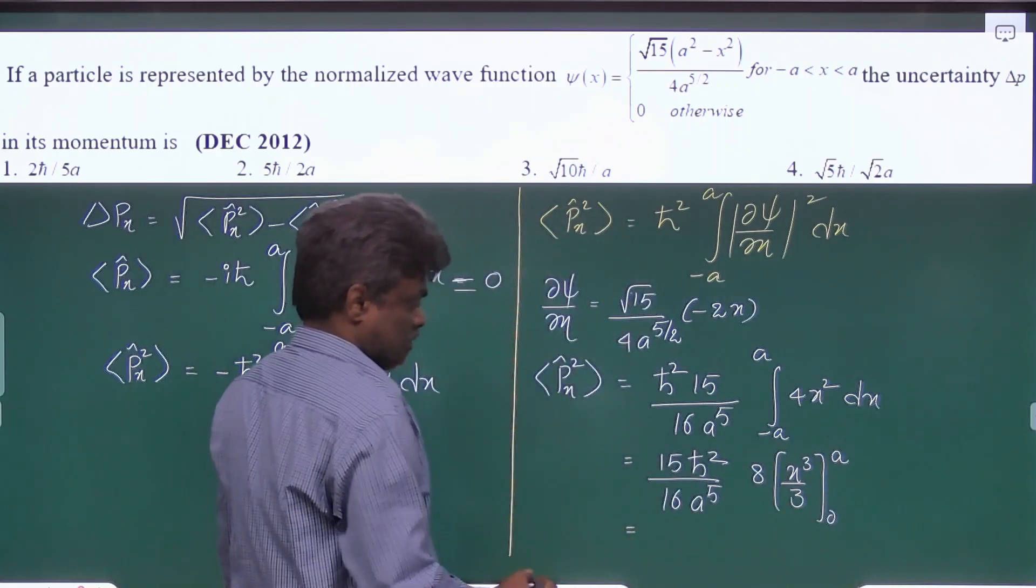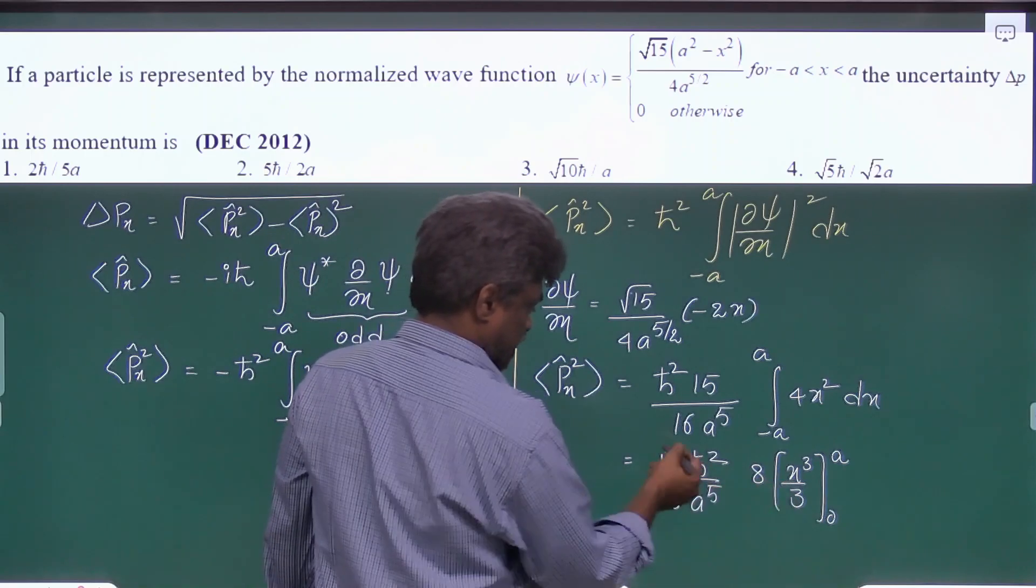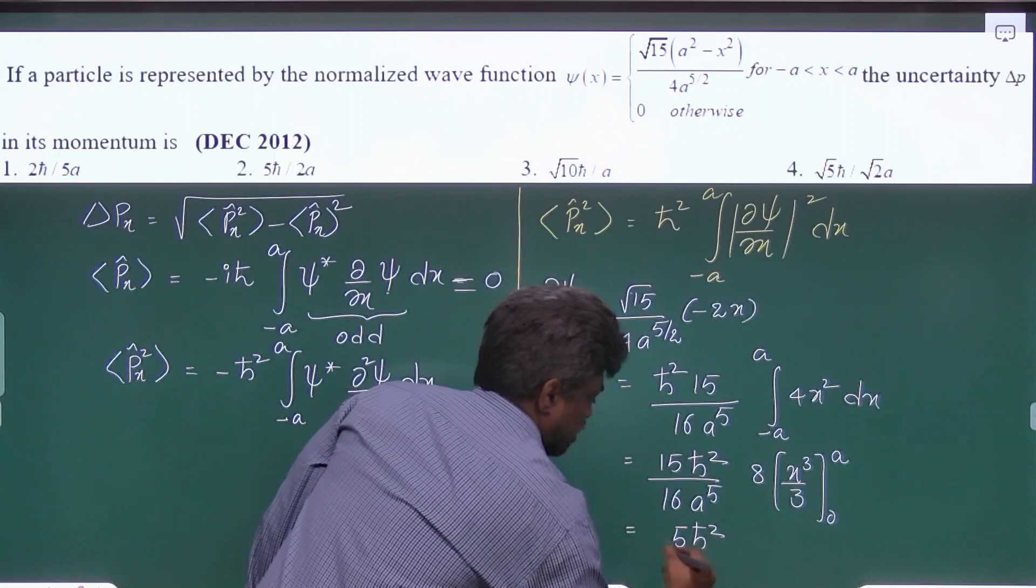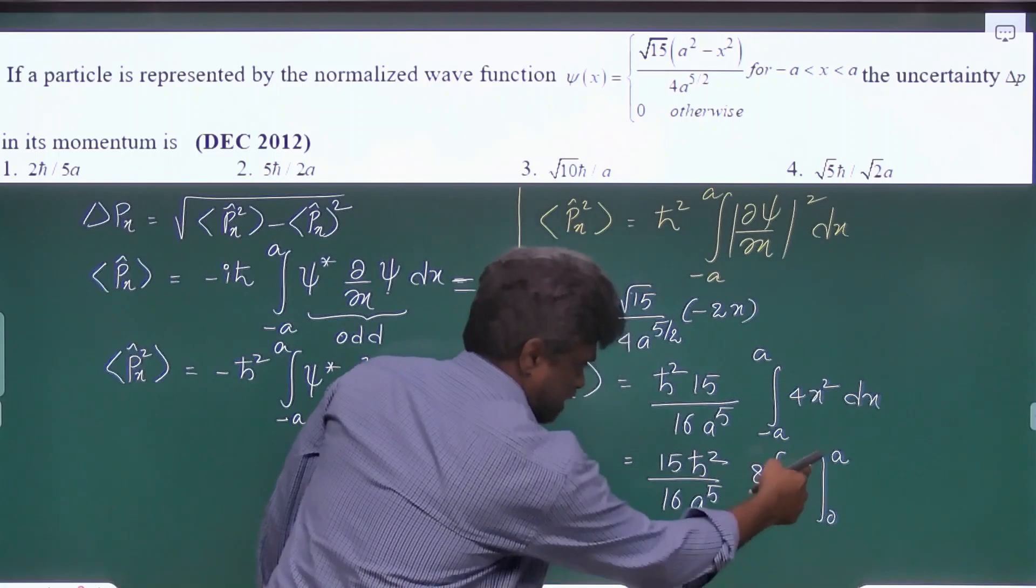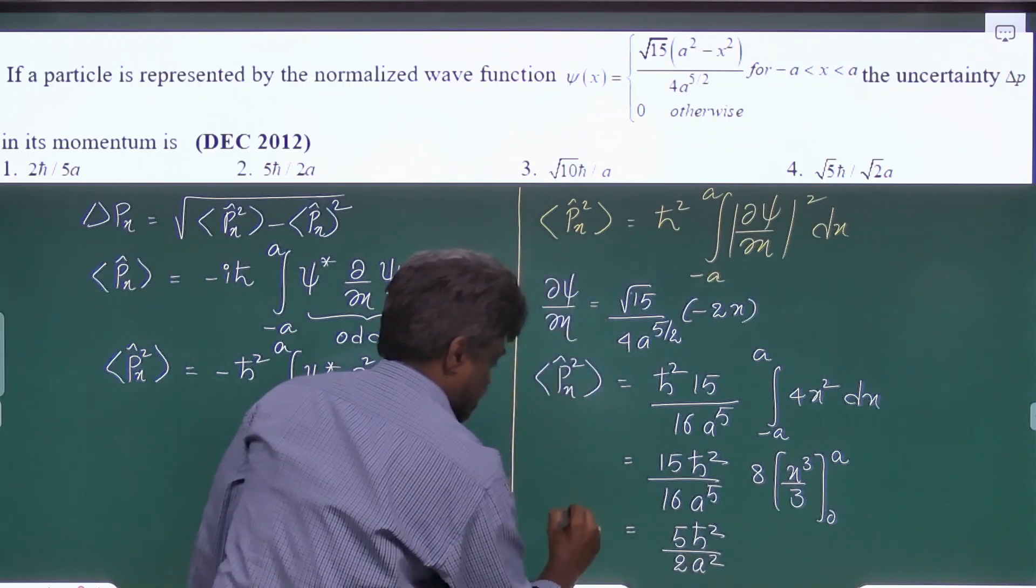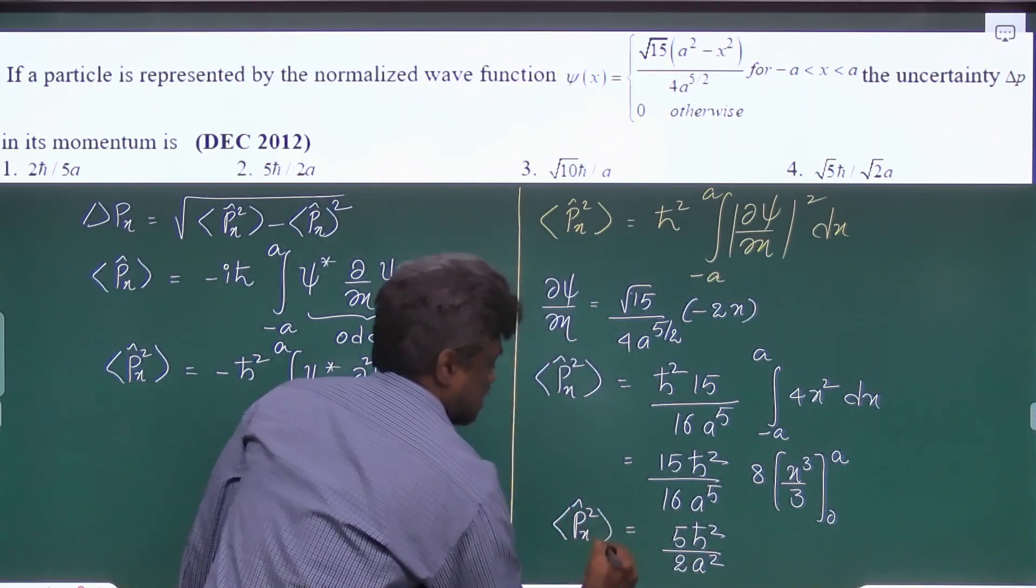So final answer will be this 2 times and here it is 5 times. So 5 h cross square by 2 a square. So this is average value of px square.